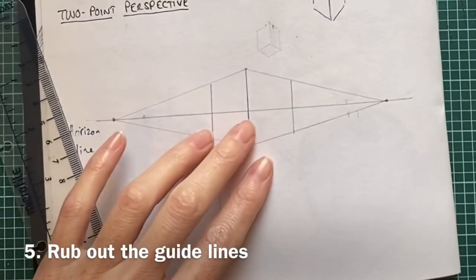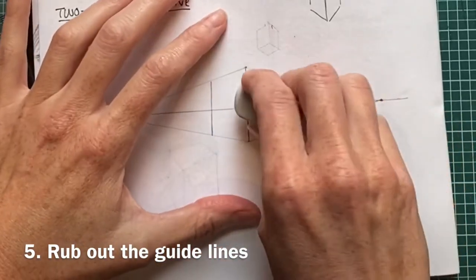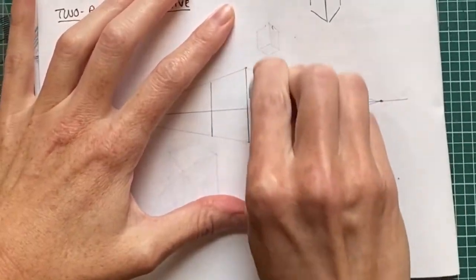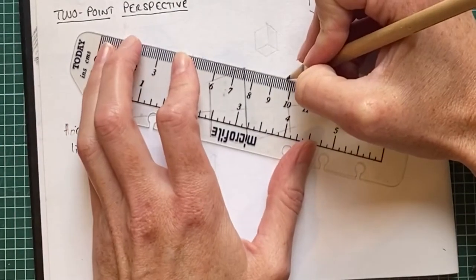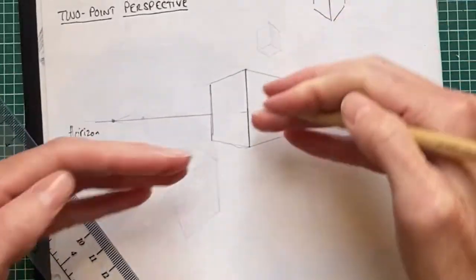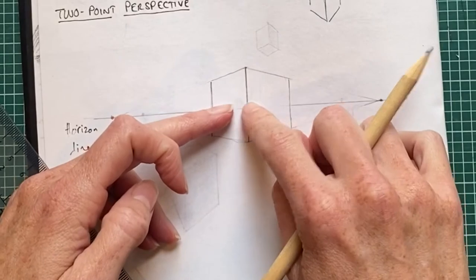Now that box is finished and I don't need any of these extra guidelines, so I'm going to rub them out. Because I've done it right in the middle of the horizon line, it's right at eye level, which is why you can't see the top or the bottom of it. It'd be like if you're standing in the street looking at the corner of a building.